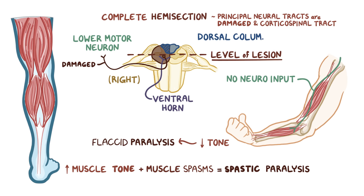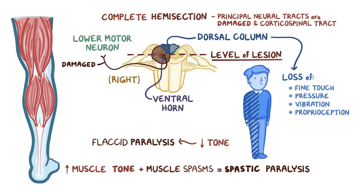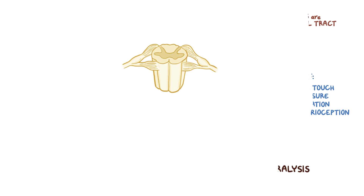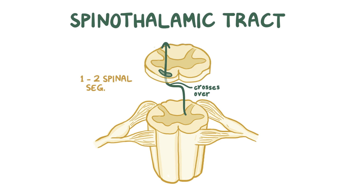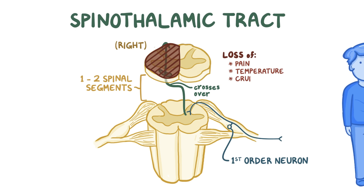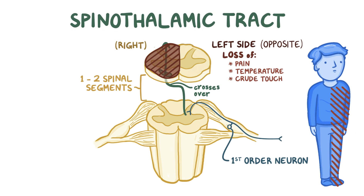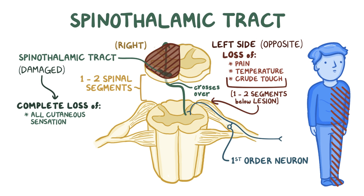There is also damage to the dorsal column on the right side, which leads to the loss of fine touch, pressure, vibration, and proprioception in the right side of the body at and below the level of the injury. The spinothalamic tract is a bit different because it crosses over to the opposite side of the spinal cord one or two spinal segments above where the first-order neurons enter. So damage to the right spinothalamic tract causes loss of pain, temperature, and crude touch sensation from the opposite or left side, beginning one or two segments below the lesion. At the level of the lesion, the spinothalamic tract of the same right side is damaged too, leading to complete loss of all cutaneous sensation at that level.